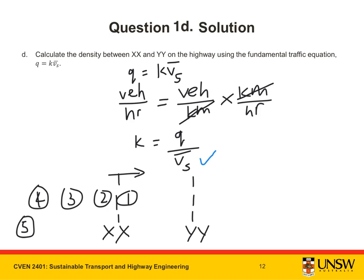Imagine you are standing at point XX. Vehicle 1 passes by, and 3 seconds later, vehicle 2 passes. In total, 5 vehicles pass by you over a period of 3, plus 4, plus 3, plus 5 seconds. This gives a flow value of 5 vehicles per 15 seconds.